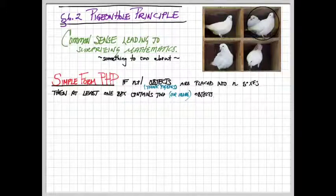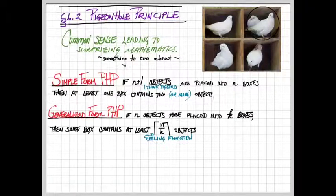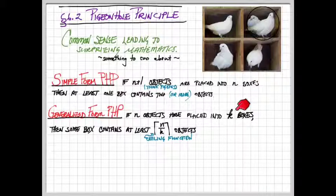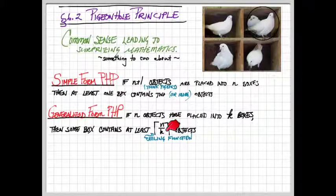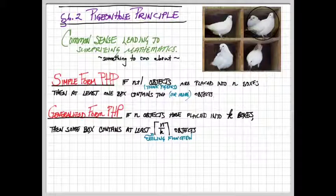We can kick it up a notch by talking the generalized form of the pigeonhole principle. In this case, we're going to have n objects, our pigeons, are being placed into k boxes. The conclusion then is going to be that some box contains at least the ceiling of n divided by k objects. So here we're rounding up using the ceiling function.